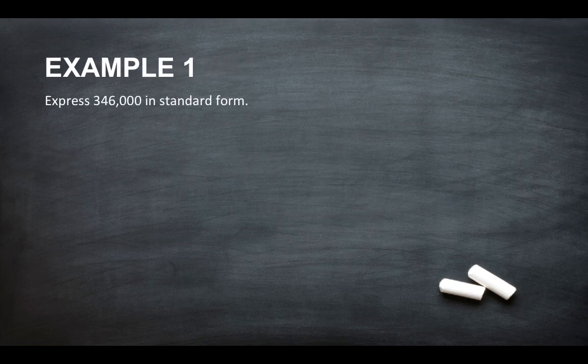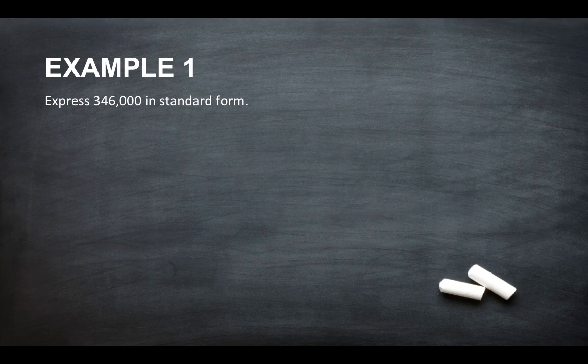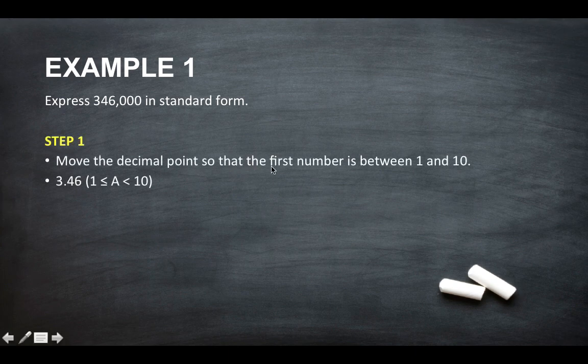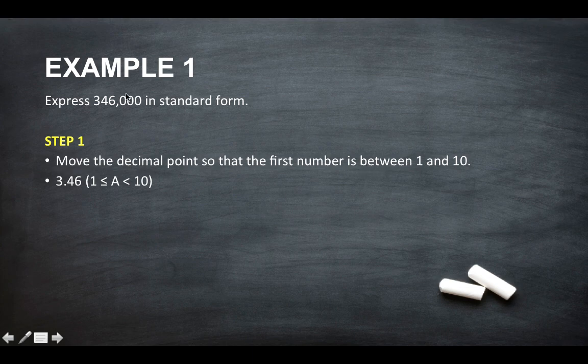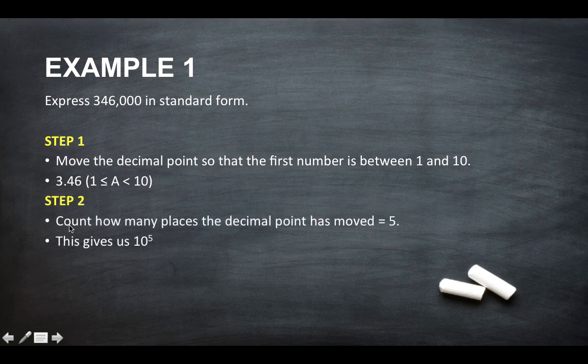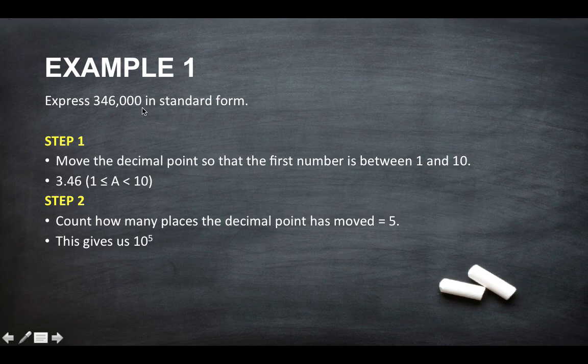So express 346,000 in standard form. Step 1: move the decimal point so that the first number is between 1 and 10. So 346 will become 3.46. Step 2: count how many places the decimal point has moved.